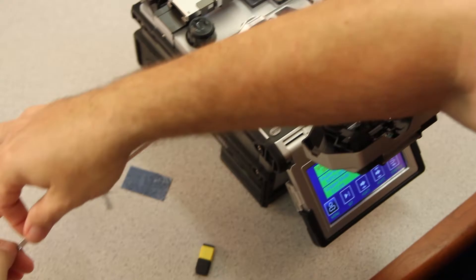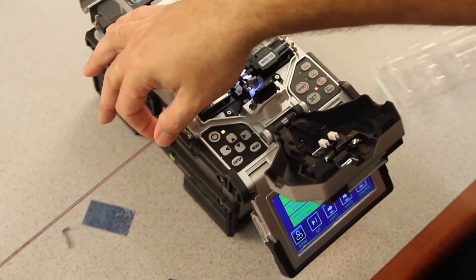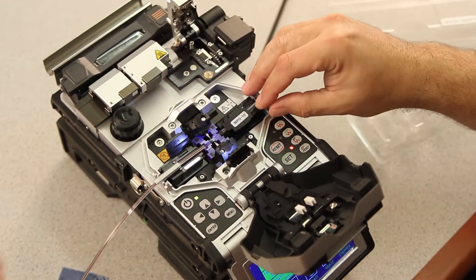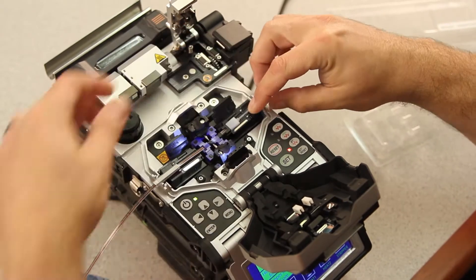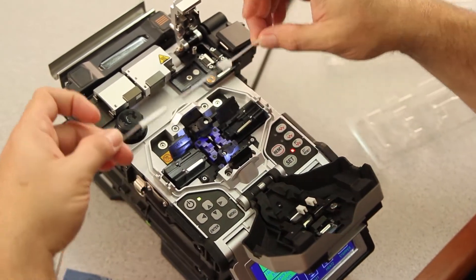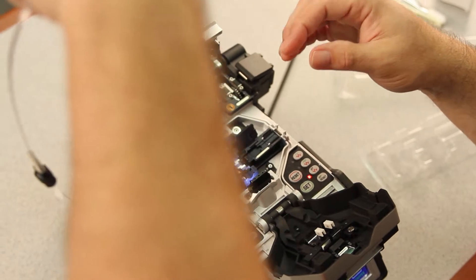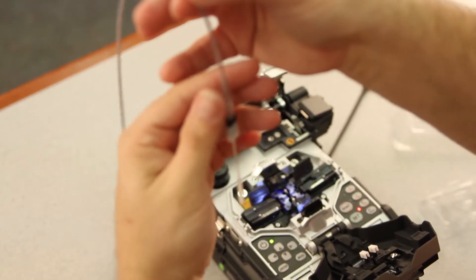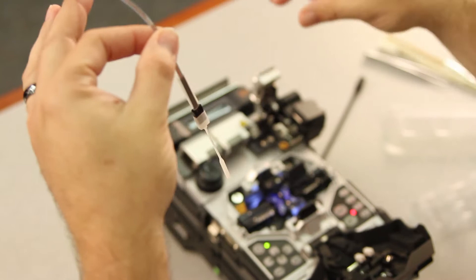Bring your heat shrink up. Open your connector door next. Gently remove your connector and allow it to hang freely. Bring your splice sleeve up.